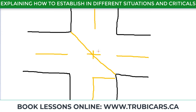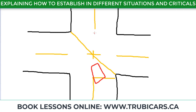Another wrong way to establish: if you have a yellow line in the middle of the street, when you establish you keep your car straight and stay closer to the yellow line. But if you angle your car sideways instead of keeping it straight, your front end ends up in the wrong lane — you're blocking oncoming traffic. That's going to be an automatic fail as well.